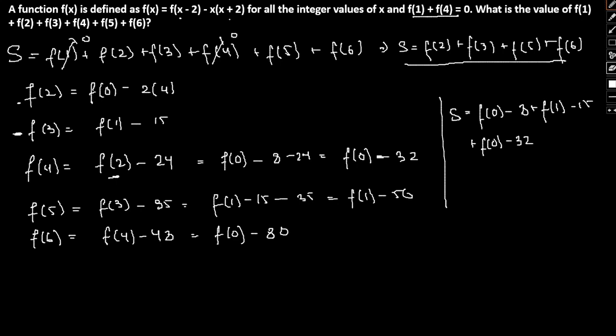f(4) plus f(1) we don't need to add. We have added f(2), f(3), so let's say f(5) is f(1) - 50 and f(6) will be f(0) - 80. What the simplification of the same would give us, 2f(0) + f(1) - 153. So this is what we have.